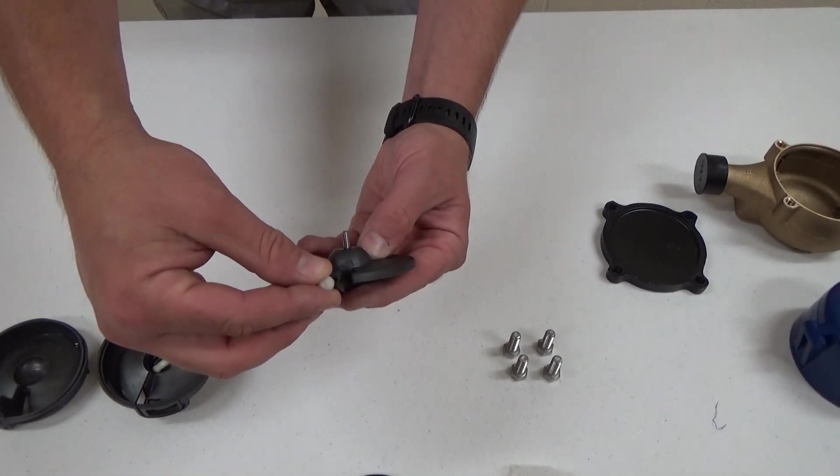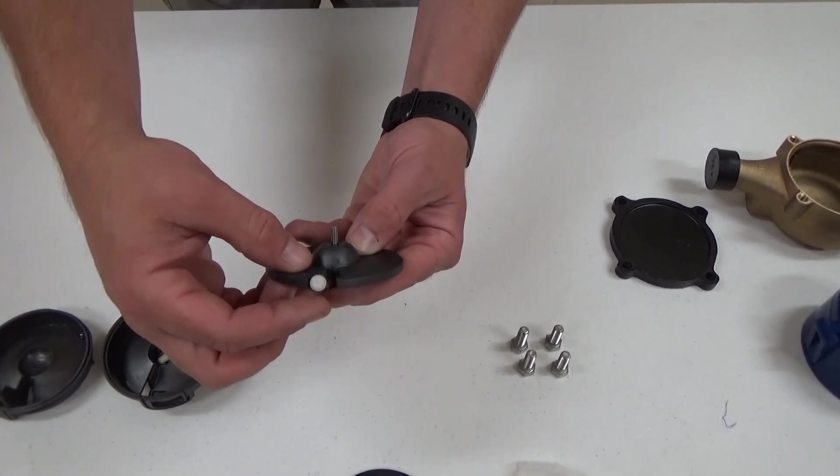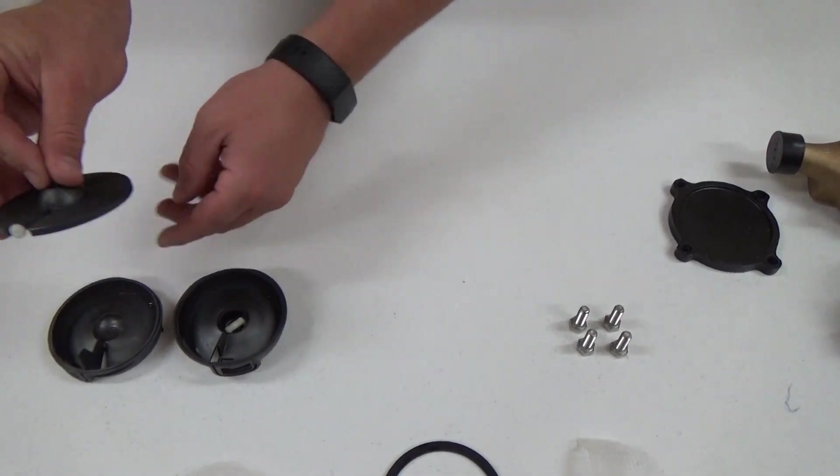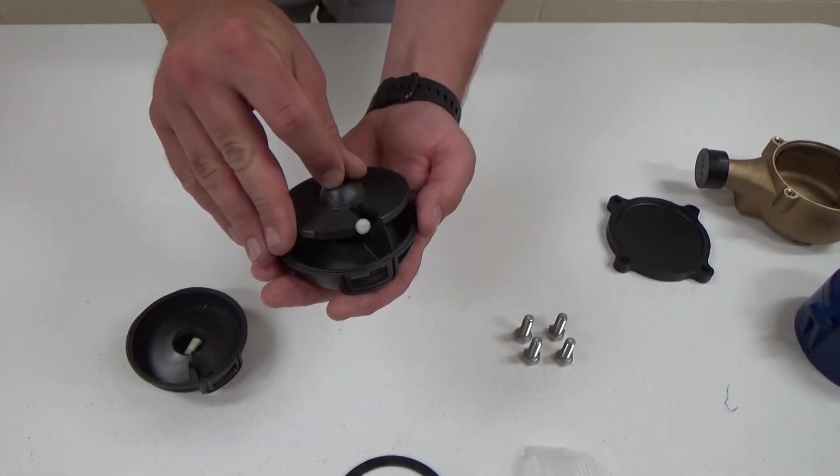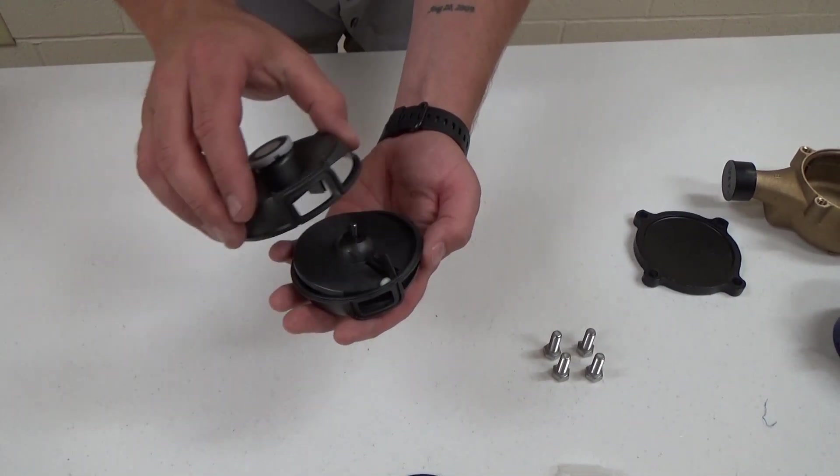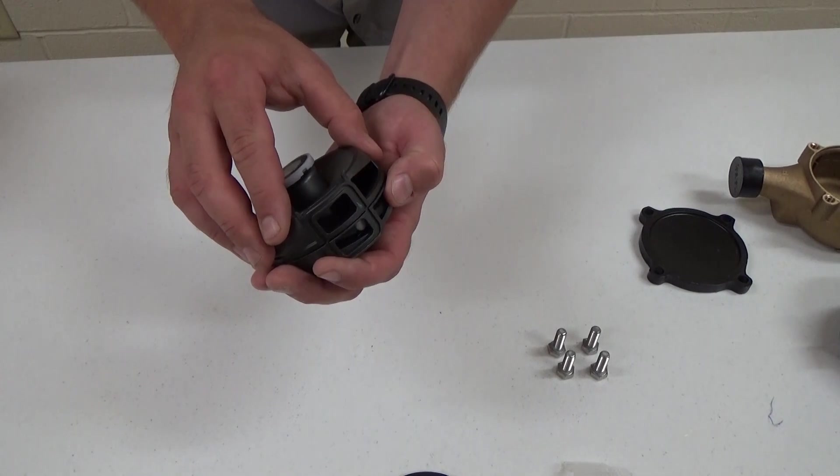He is putting the thrust roller into the disc pin assembly. He will put the disc pin assembly into the top chamber assembly and the bottom chamber assembly and snap it together.